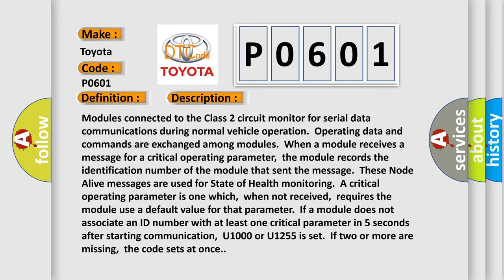Modules connected to the Class 2 circuit monitor for serial data communications during normal vehicle operation. Operating data and commands are exchanged among modules. When a module receives a message for a critical operating parameter, the module records the identification number of the module that sent the message. These node alive messages are used for state of health monitoring. A critical operating parameter is one which, when not received, requires the module use a default value for that parameter.